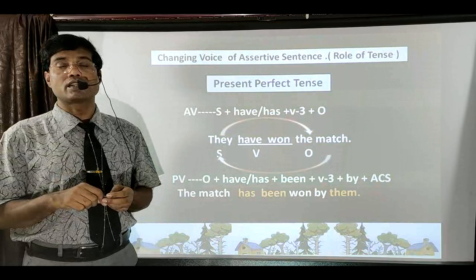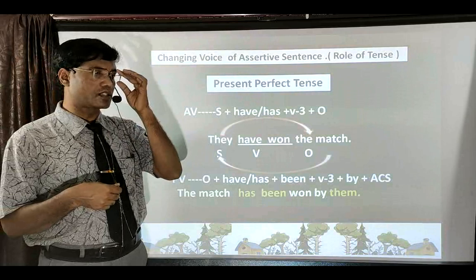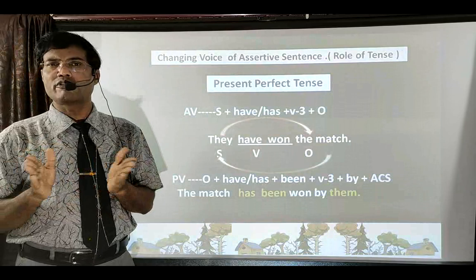For those who know the passive voice of Simple Present Tense, Present Continuous Tense, and Present Perfect Tense, making passive voice of Simple Past, Past Continuous, or Past Perfect Tense won't be difficult — it becomes easier. You only need to change the to-be form of verb and helping verb accordingly.